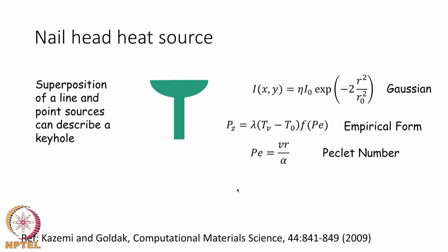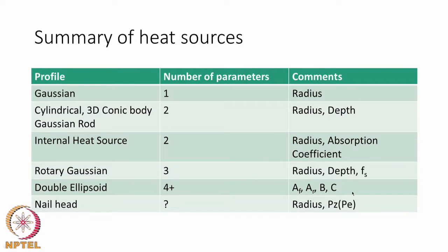Here is a summary of all the heat sources discussed. The first column shows the heat profile, the second column shows the number of parameters to be chosen, and the third column has comments. The Gaussian profile is the simplest of all, with only one parameter — the radius.